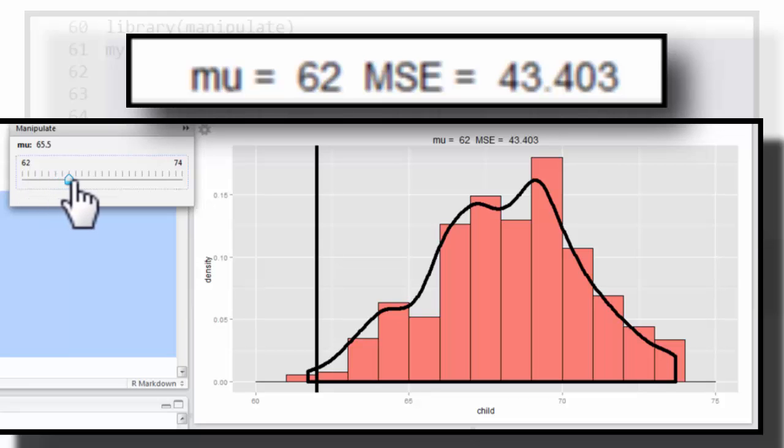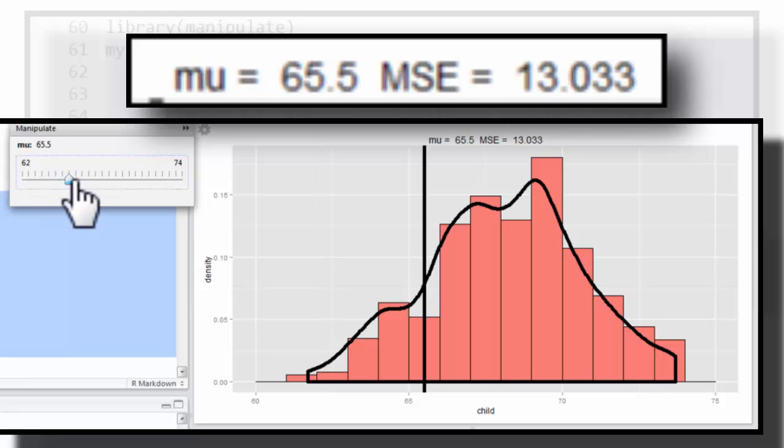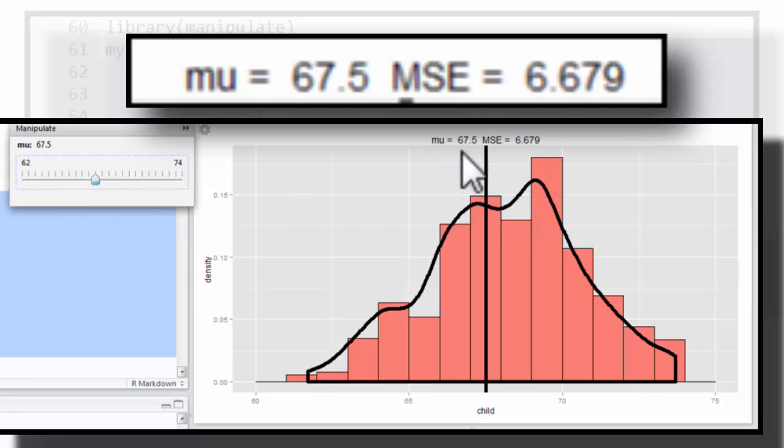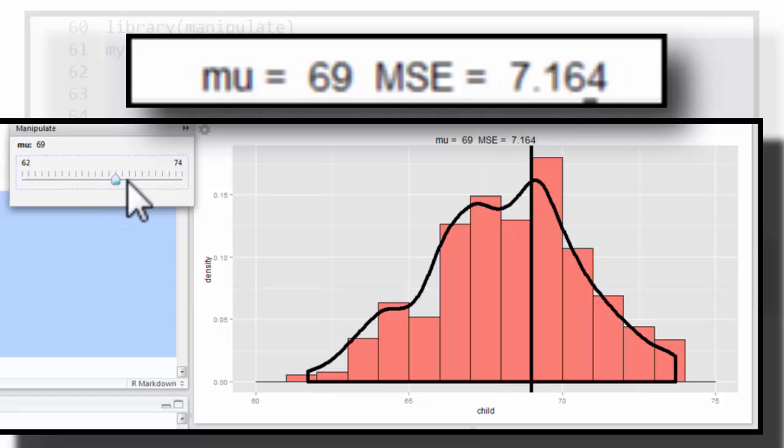Now notice as I move the mean around, which I can do now with manipulate, let's move it more towards the center of the distribution. Notice the mean has gone up. Let's move it right here. Notice the mean went up to 67.5, but the mean squared error dropped quite a bit. It helped balance out the histogram. That was almost the point where it would balance it out perfectly. And you can see as I get here, it goes down a little bit more, but then at some point it starts going back up again.